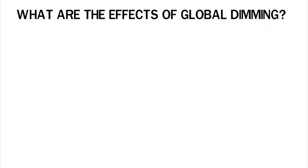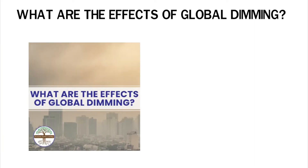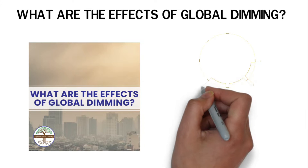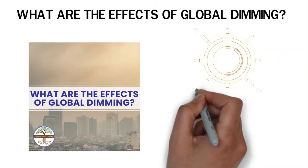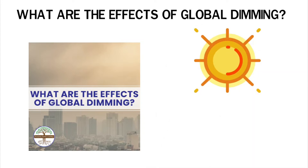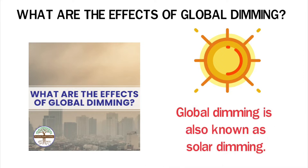What are the effects of global dimming? Global dimming is the gradual decrease in the amount of solar energy reaching the earth's surface. It occurs due to increased particulates in the atmosphere. These particles block the heat and light from the sun, causing a cooling effect on the planet. Global dimming is also known as solar dimming.